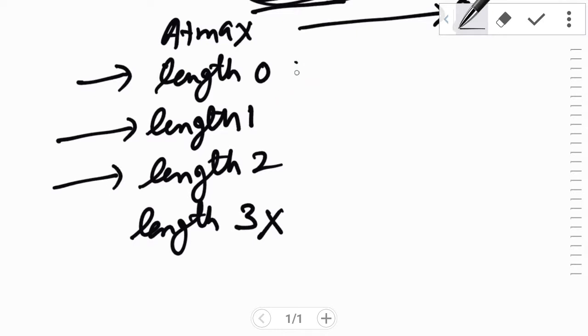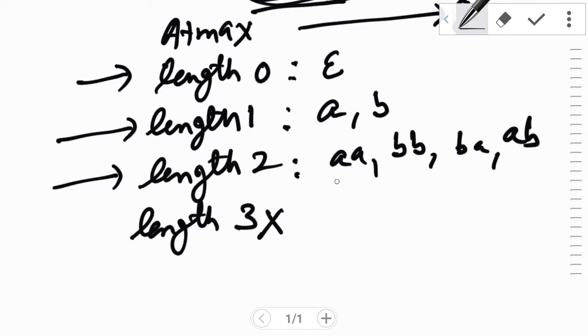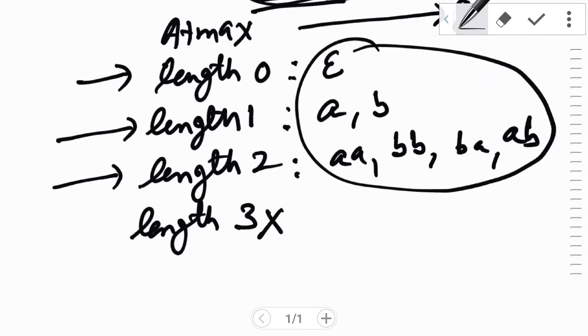The strings of length 0 is epsilon. The string of length 1 is just A or just B. The string of length 2 is double A, double B, BA, and AB. So only these seven strings should be accepted by a DFA, nothing else.